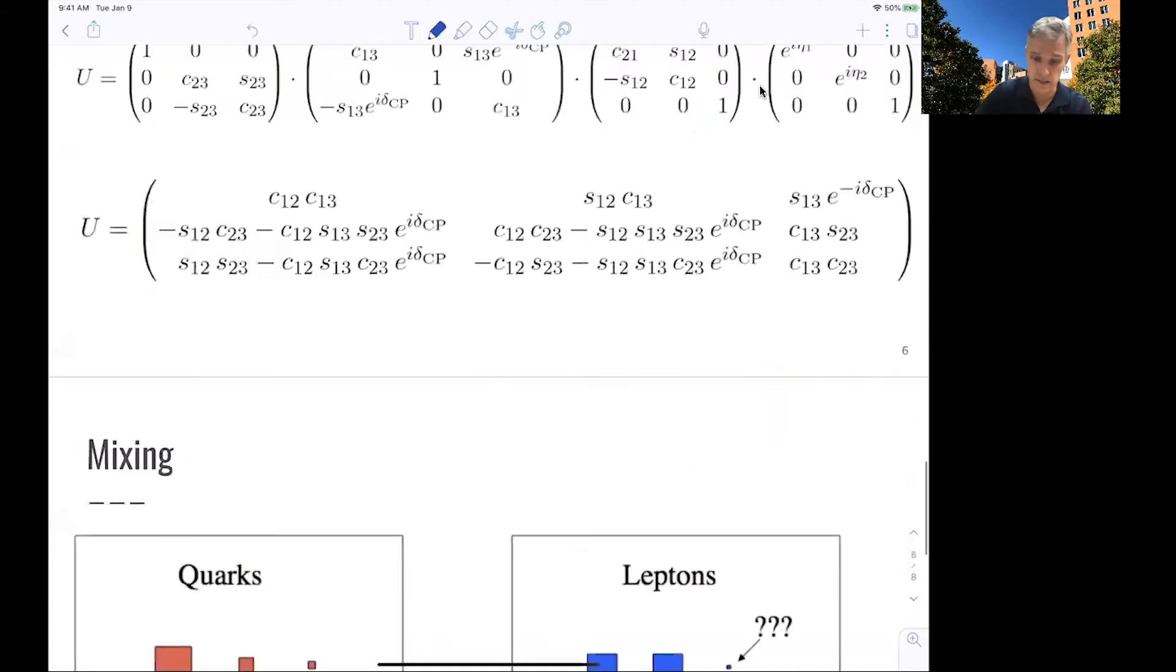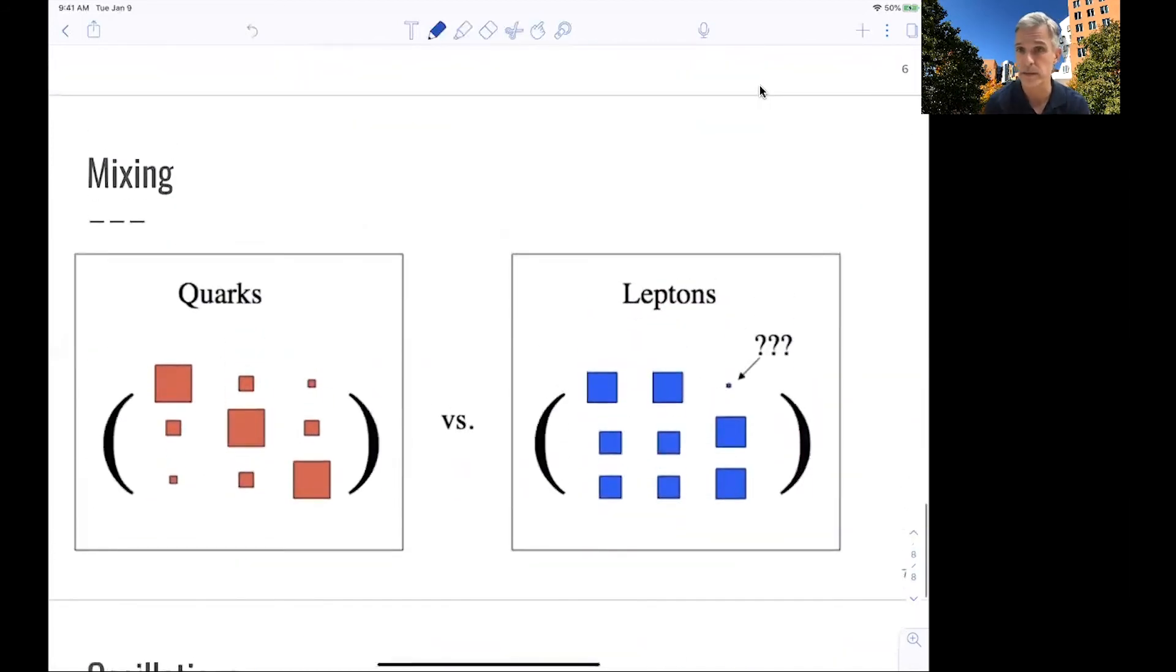The big difference is that the values of those parameters are quite different. For the quarks, we've seen it's dominated by the diagonal. And we've seen, for example, in the Wolfenstein parameterization, that we can do an expansion of the matrix and see terms which are all of this lambda, which was 0.22, and lambda squared and lambda cubed.